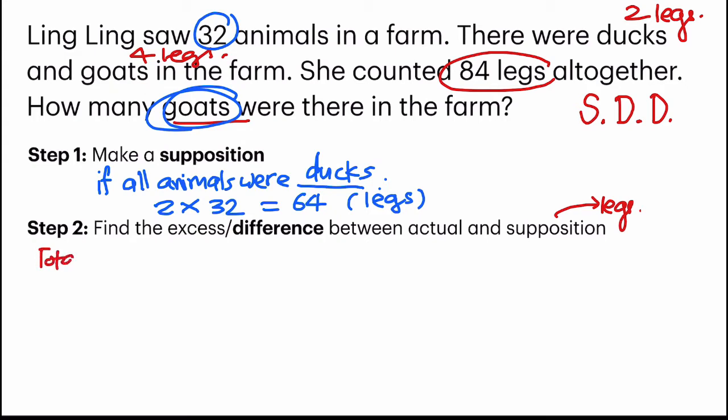First is the total number of legs. The total number of legs, remember? Actually, there was 84. But, the part that we have supposed, making the if statement, there was 64. So the difference is 20 for the total number of legs.